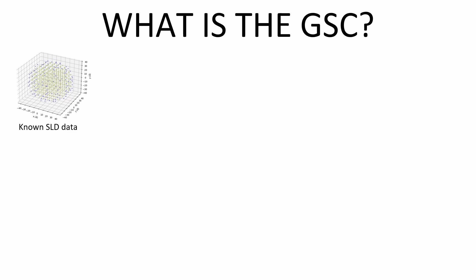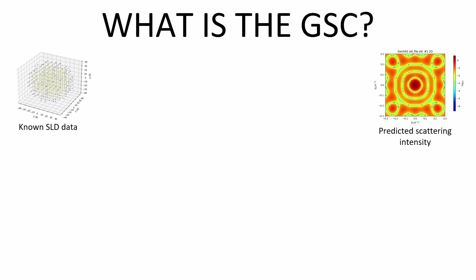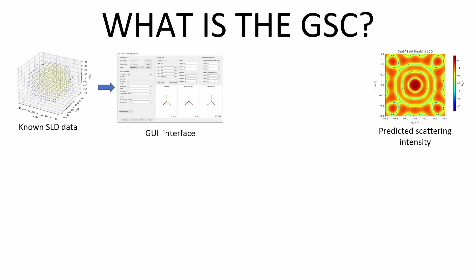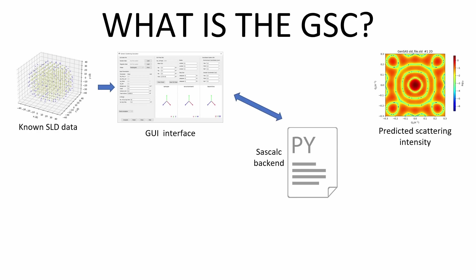If we have a sample and we know or can estimate its scattering length densities, we should be able to calculate the expected scattering intensity pattern. The generic scattering calculator is a GUI interface in SASView, located in the tool menu, which allows these intensities to be easily calculated and displayed. It uses a Python backend to perform these scattering calculations. The output is displayed both as an image, and moved to the SASView Data Explorer panel, where it can be compared with standard models or other data.